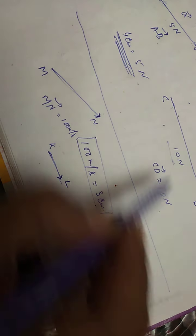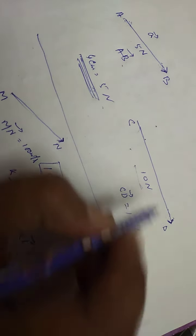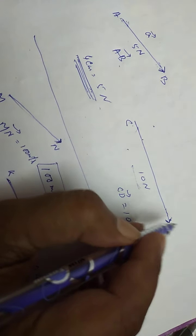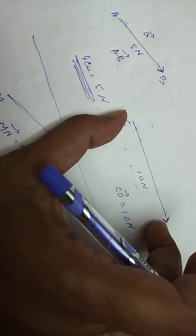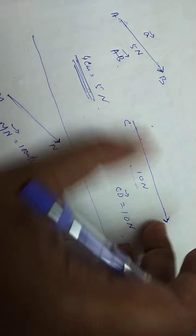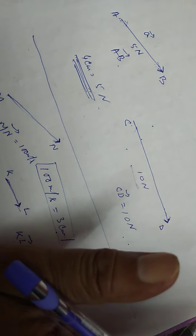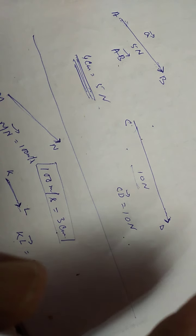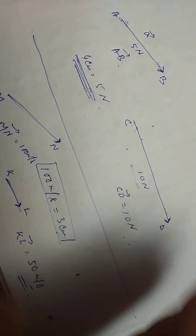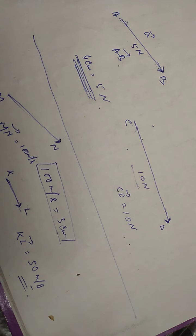So this way we represent vectorial quantities: their magnitudes are represented by the length of the line, and the arrowhead gives the direction of the vector. When magnitude and direction are both combined, we get a vector quantity.